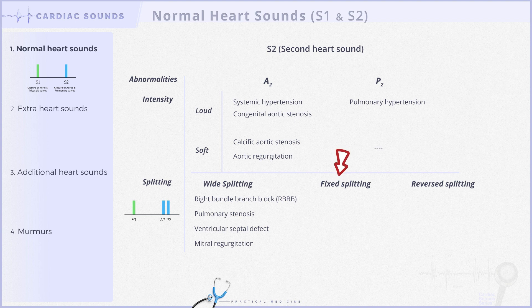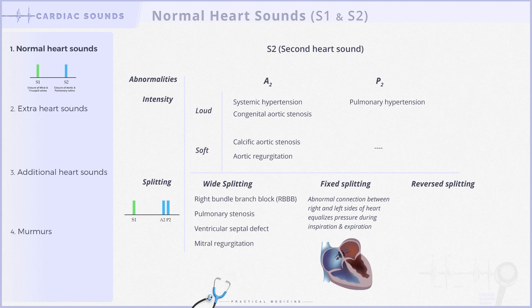The next type of S2 splitting is called fixed splitting. Fixed splitting occurs when S2 remains unchanged throughout the respiratory cycle, unaffected by inhalation or exhalation. This occurs due to an abnormal connection between the right and left atria, maintaining consistent right-sided blood volume during both breathing phases. Fixed splitting occurs in an atrial septal defect.